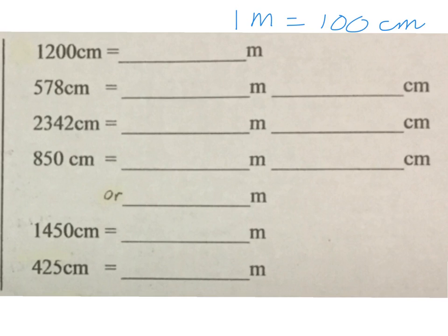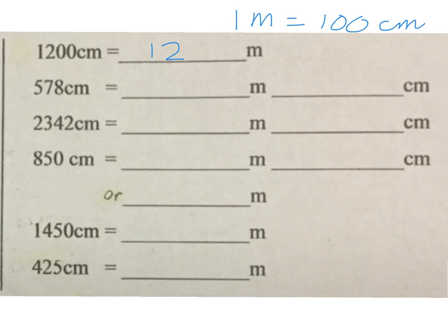Just a reminder: one meter is 100 centimeters. Now we convert centimeters to meters. Ask: who's the big one? The meter is big. Do I have enough small ones to make a big one? Yes — I need 100 centimeters to make one meter. For 1200 centimeters: there are twelve hundreds, so that makes 12 meters. For 578 centimeters: we need 100 — there are five hundreds (500 centimeters), giving 5 meters, and 78 centimeters are left over — too few to make another meter.